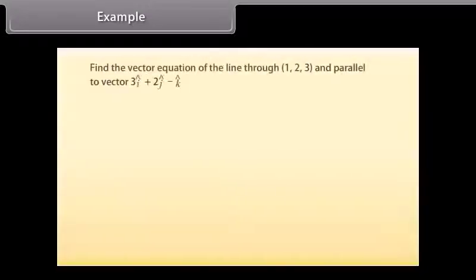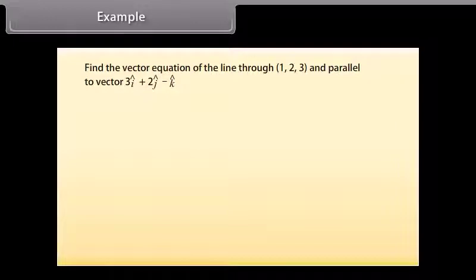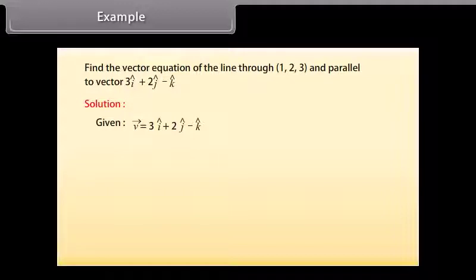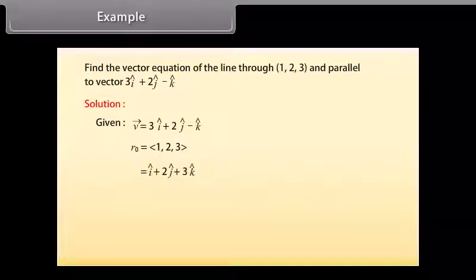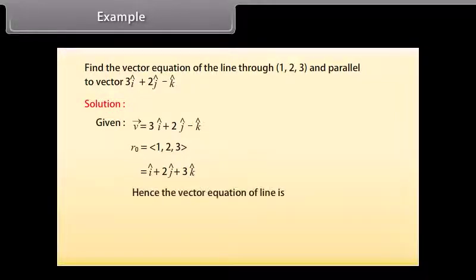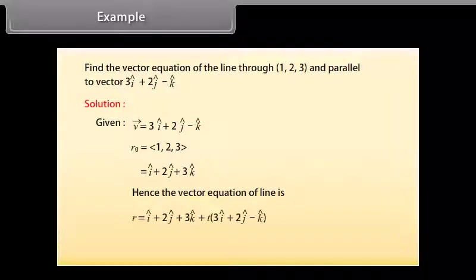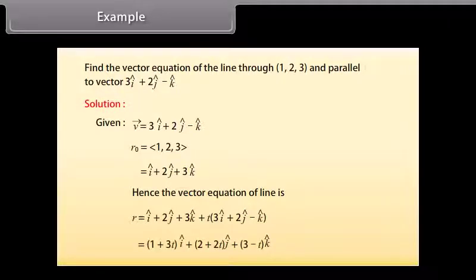Example: Find the vector equation of the line through (1, 2, 3) and parallel to vector 3i-cap plus 2j-cap minus k-cap. Solution: Given vector V equals 3i-cap plus 2j-cap minus k-cap, and R0 equals i-cap plus 2j-cap plus 3k-cap. Hence the vector equation of the line is: R equals (i-cap plus 2j-cap plus 3k-cap) plus T(3i-cap plus 2j-cap minus k-cap), which equals (1 plus 3T)i-cap plus (2 plus 2T)j-cap plus (3 minus T)k-cap.